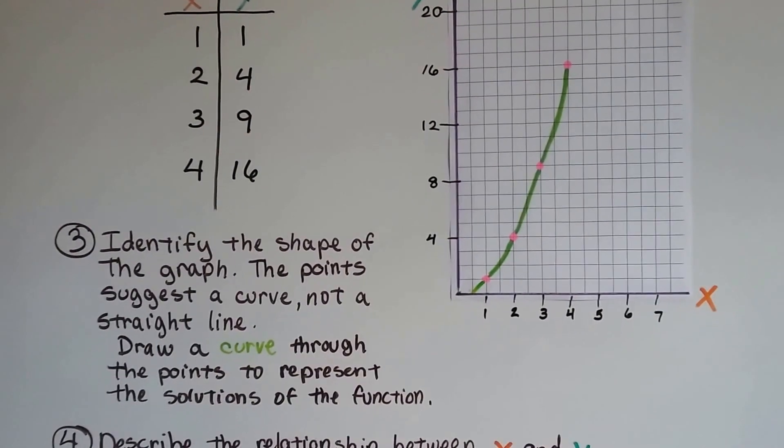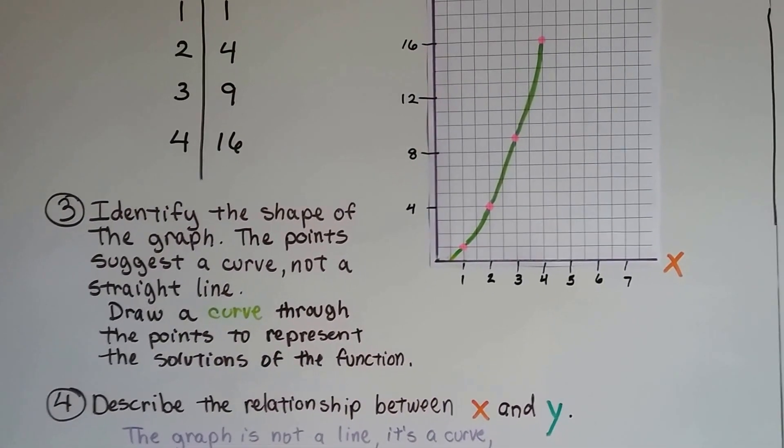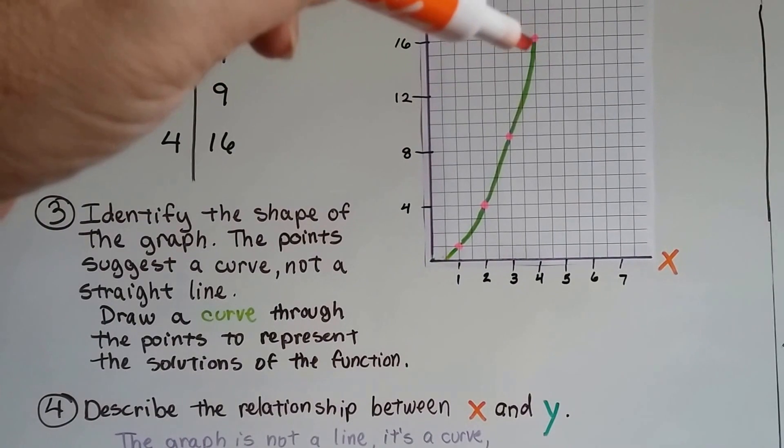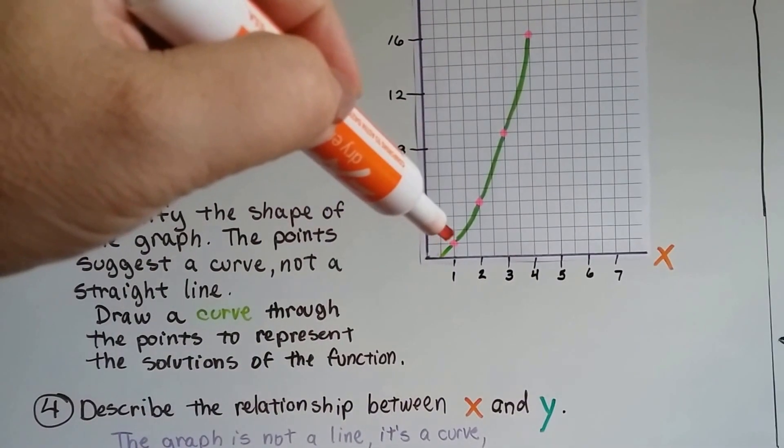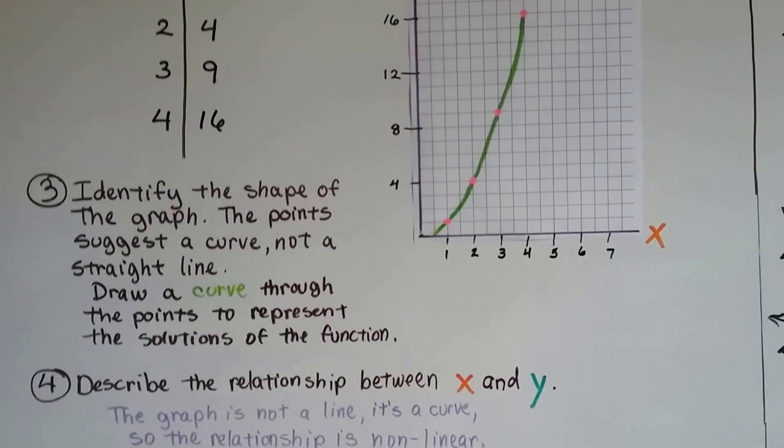We identify the shape of the graph. The points suggest a curve, not a straight line. We draw a curve through the points to represent the solutions to the function. It goes here, and then it comes up, and then it comes up even steeper, and then it really comes up steep.